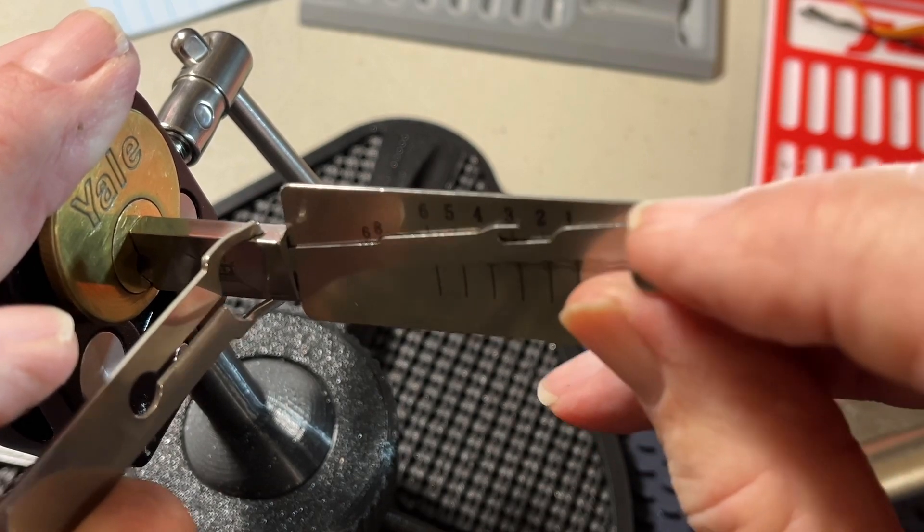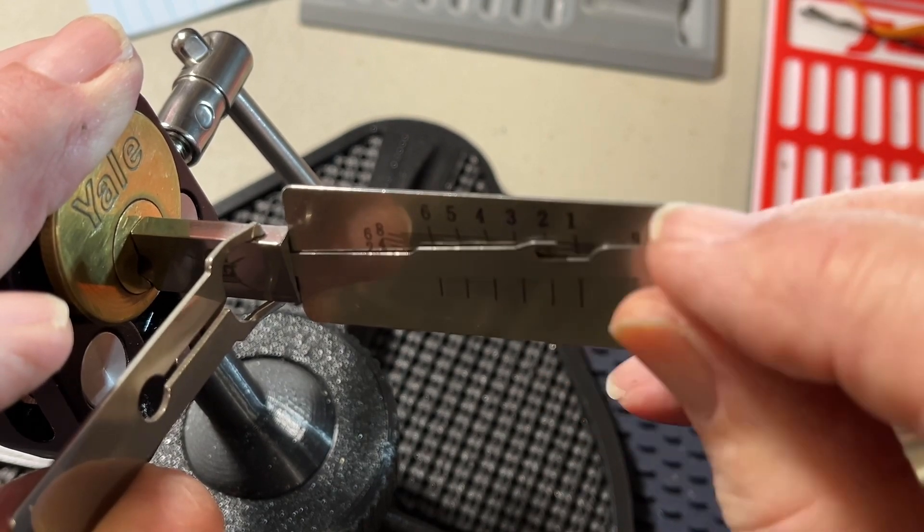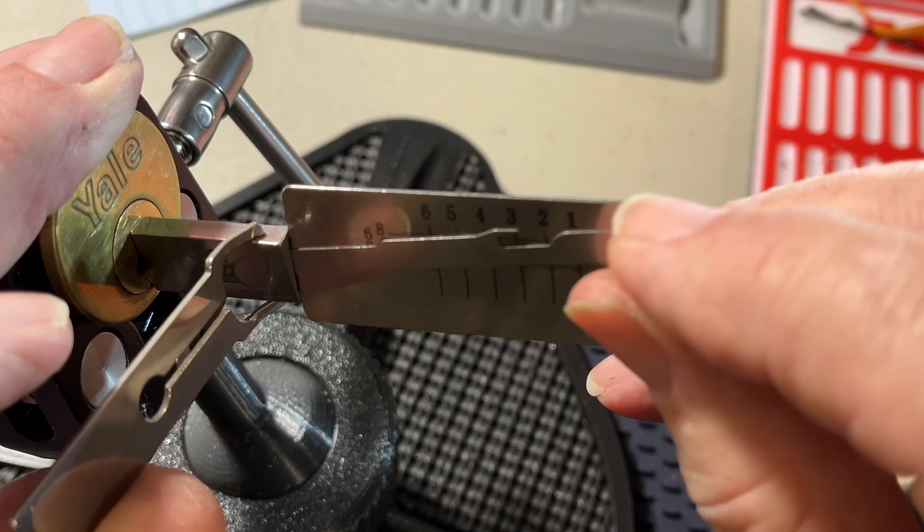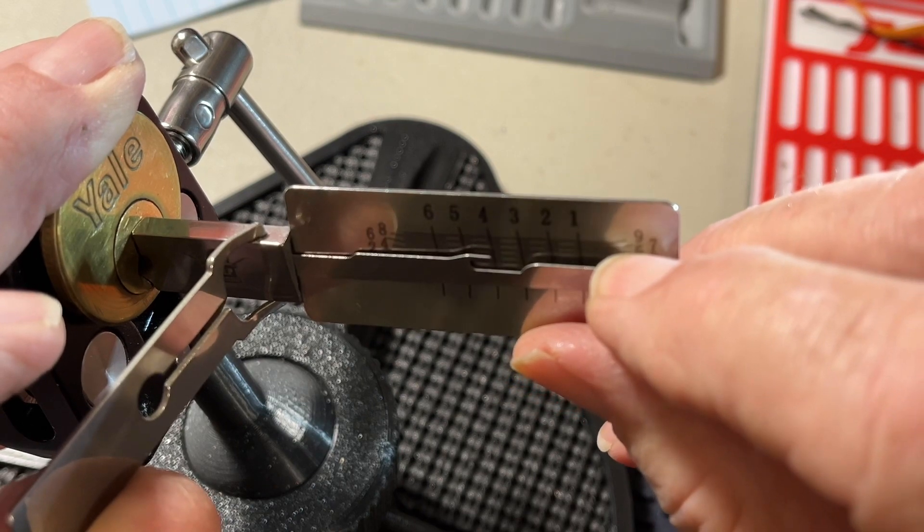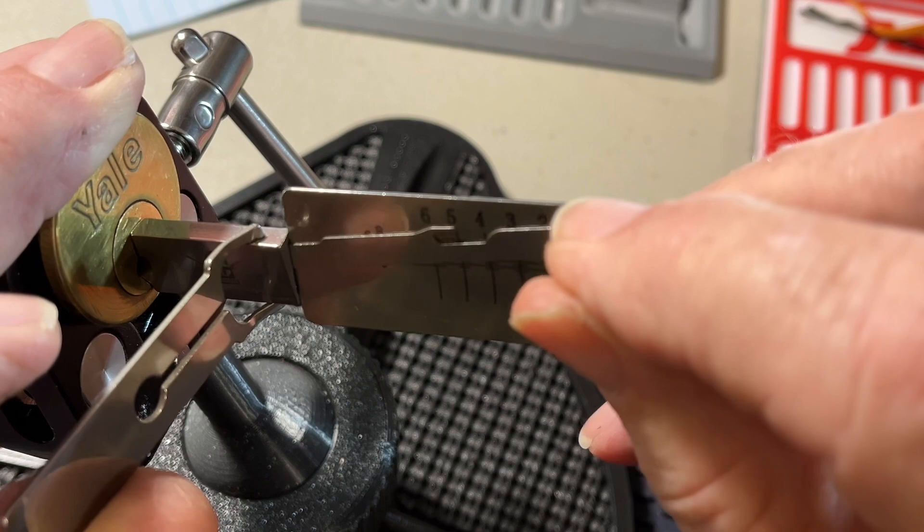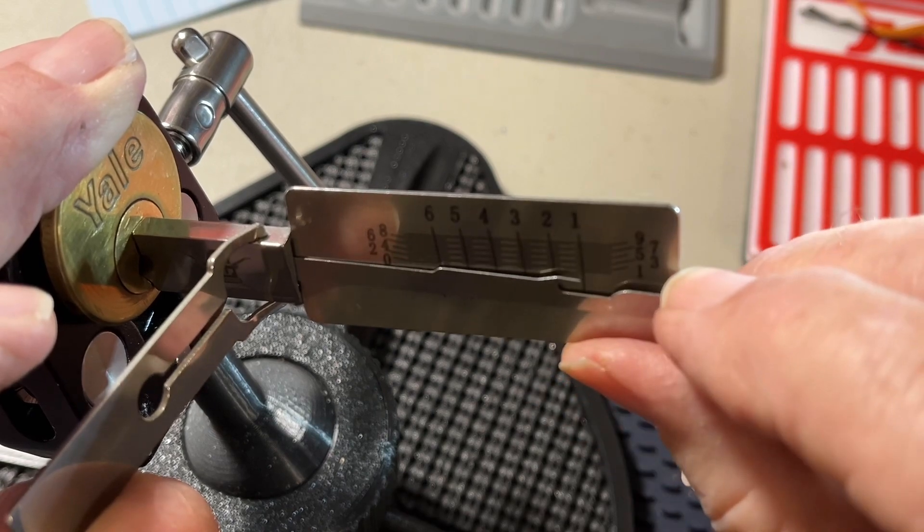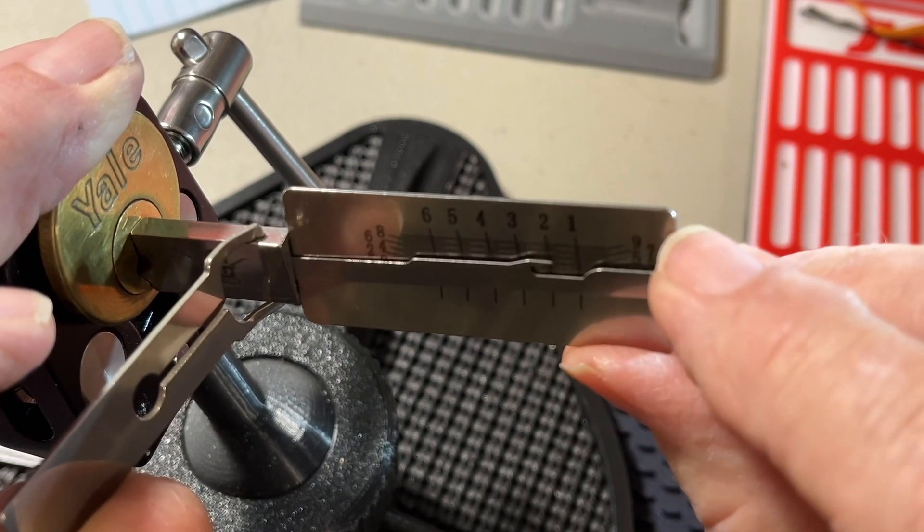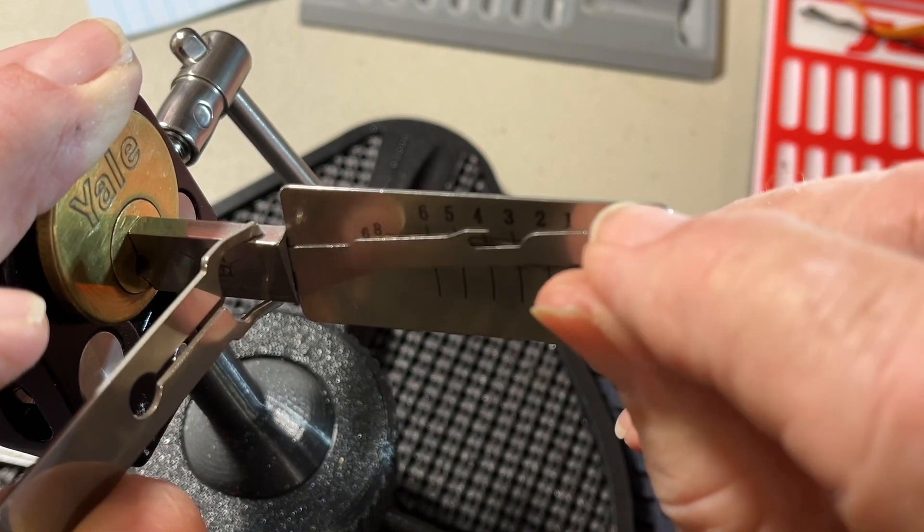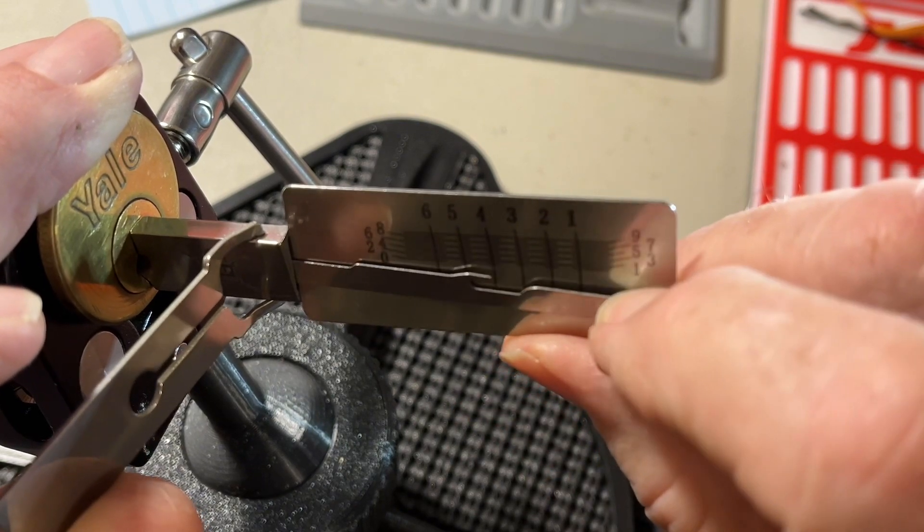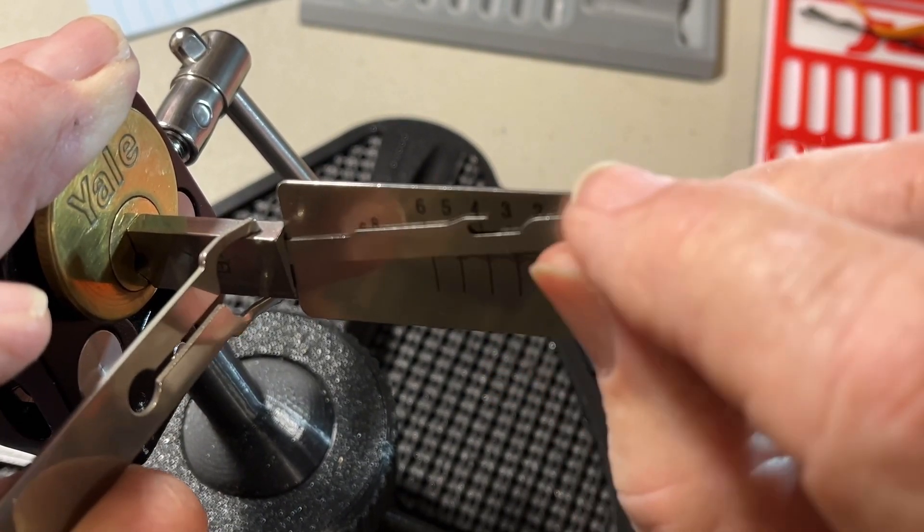Going through the pins. Nothing on 1, 2, or 3. A little click on 4 but nothing holds. Nothing on 5. Starting again - click on 2, nothing on 3, click on 4, click on 5 but nothing on 5.